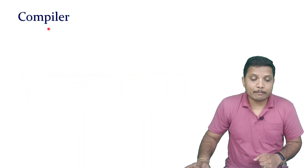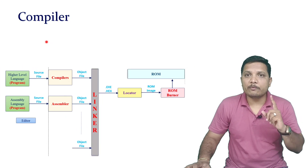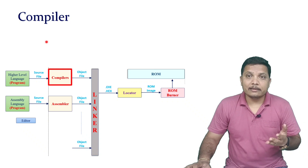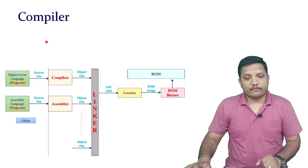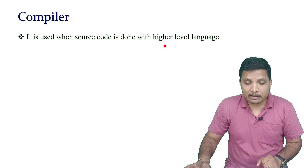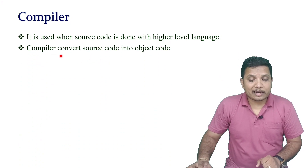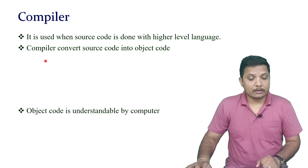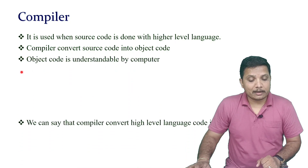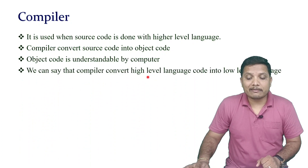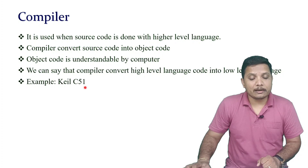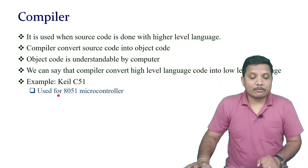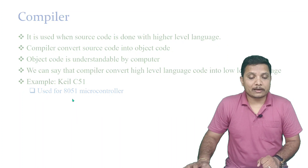The next tool is the compiler. When the program is written in a higher level language, the source file is given to the compiler, which generates an object file. The compiler converts source code into object code that is understandable by the computer — in other words, it converts a higher level language into a lower level language. For example, Keil C51 is a very popular compiler used to program the 8051 microcontroller.